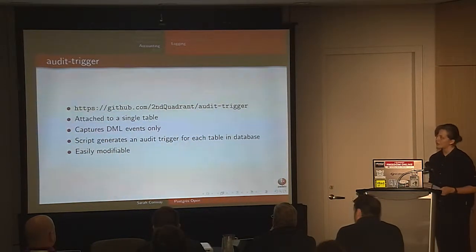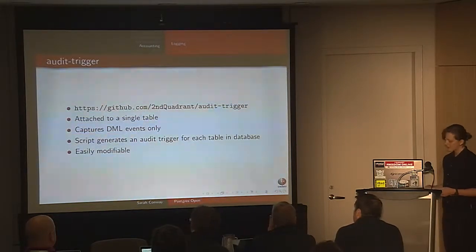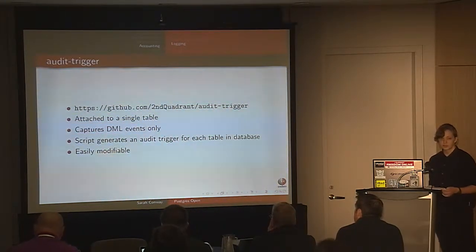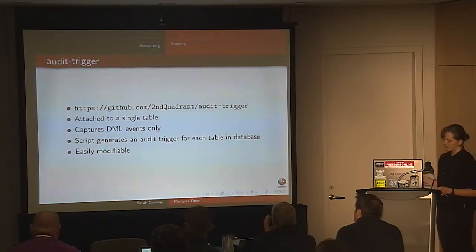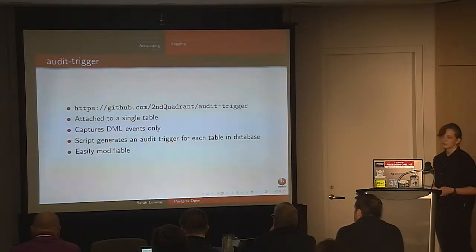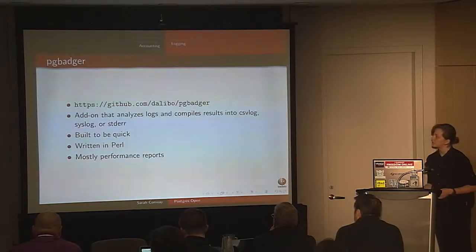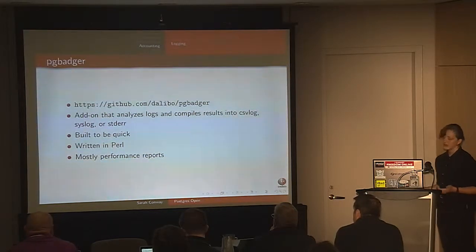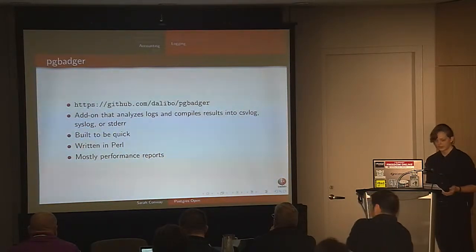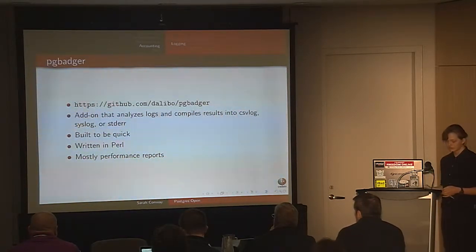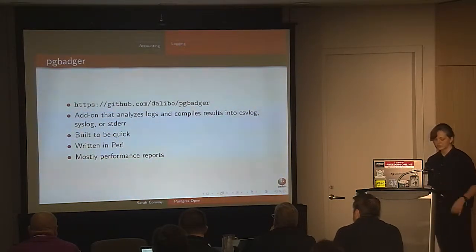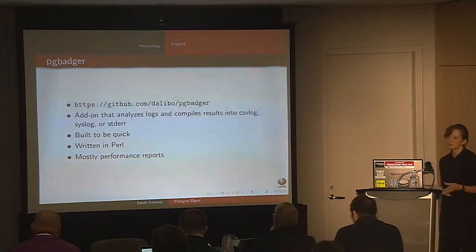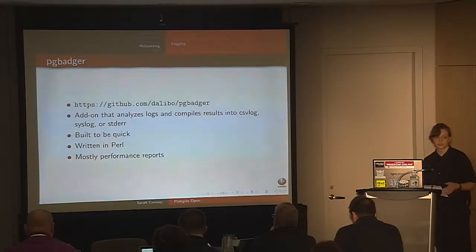There's also Audit Trigger, another add-on for Postgres. It's attached to a single table and captures DML events. It's at audit-trigger on GitHub and generates an audit trigger for each table in the database, and can easily be modified. Finally, PG Badger is an add-on that analyzes logs and produces reports such as statistics, queries by type, slowest queries, most frequent errors, and connections and sessions per database user and client. It's mostly performance-oriented but can also be useful for auditing the database for security issues.